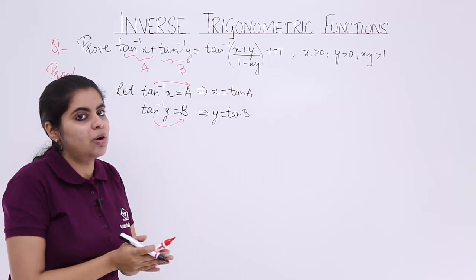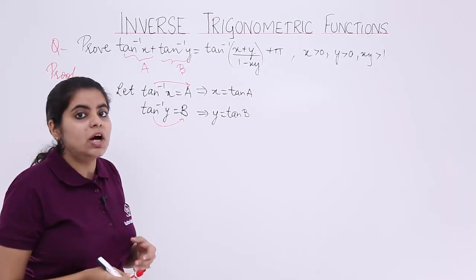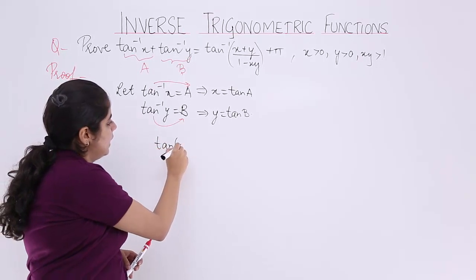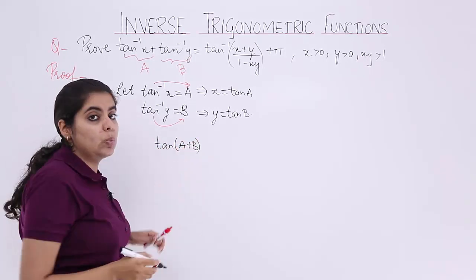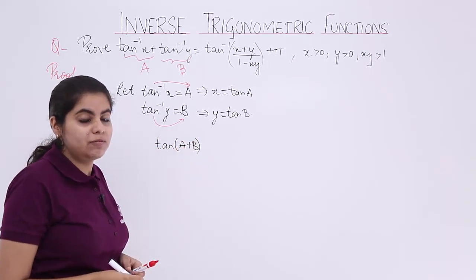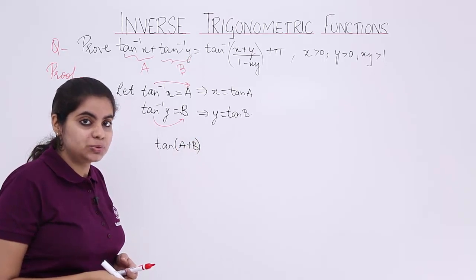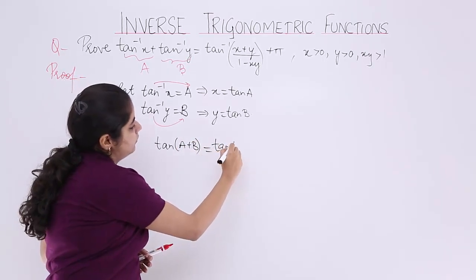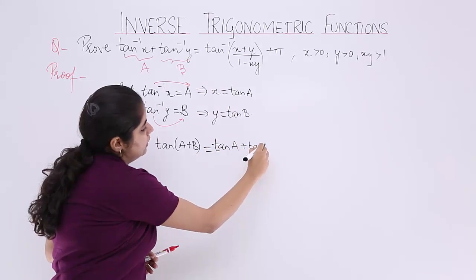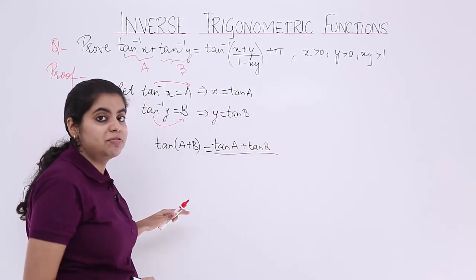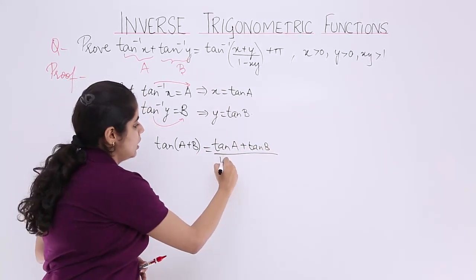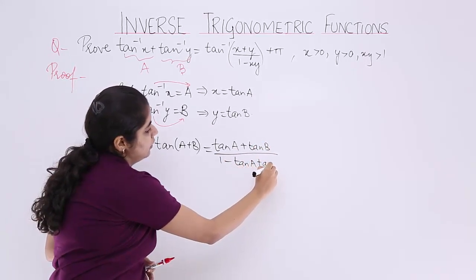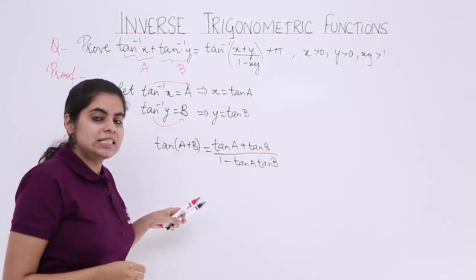Now we know the formula for tan(a+b). What is the formula for tan(a+b) that we studied in class 11? It is tan(a+b) equals (tan a + tan b) divided by (1 − tan a · tan b). Since it is a formula, I will be enclosing it in a big box.